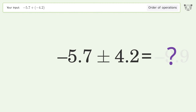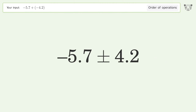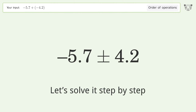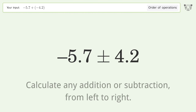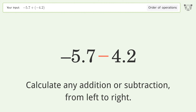You asked Tiger to calculate. This deals with the order of operations. The final result is negative 9.9. Let's solve it step by step.